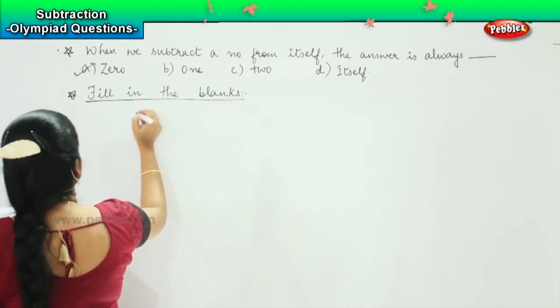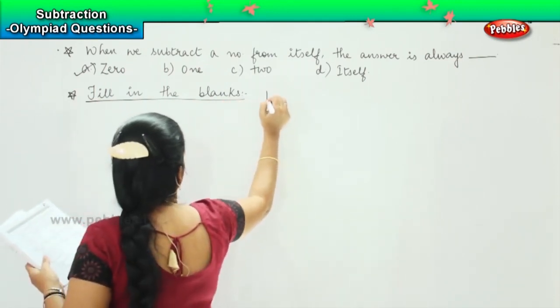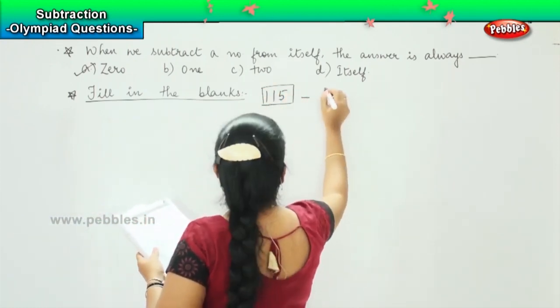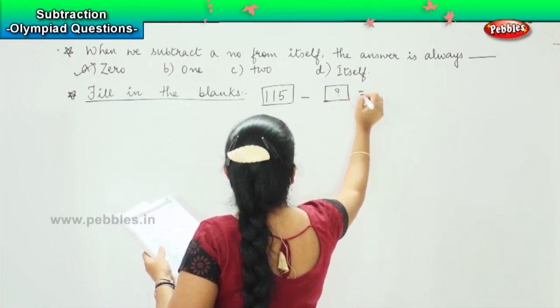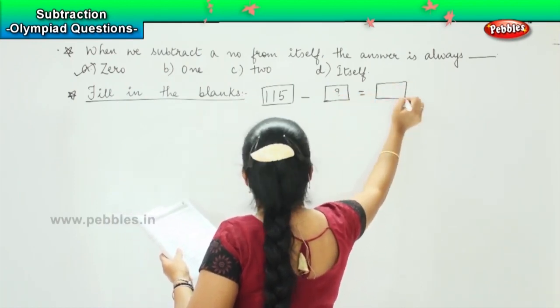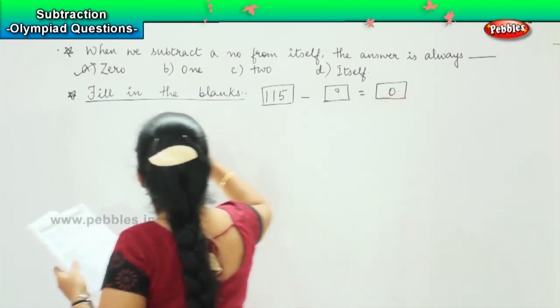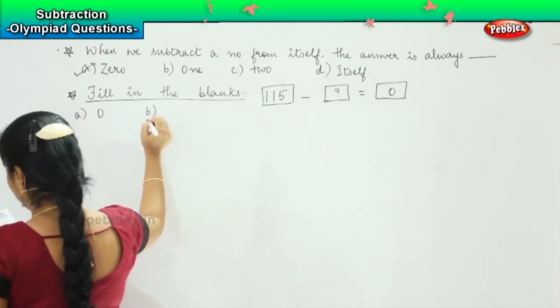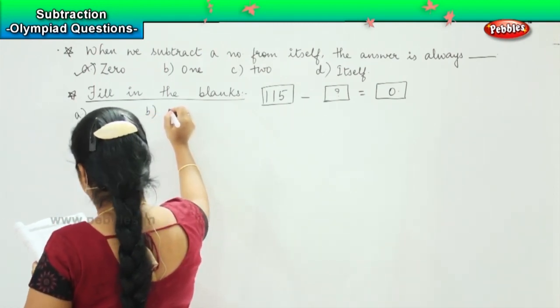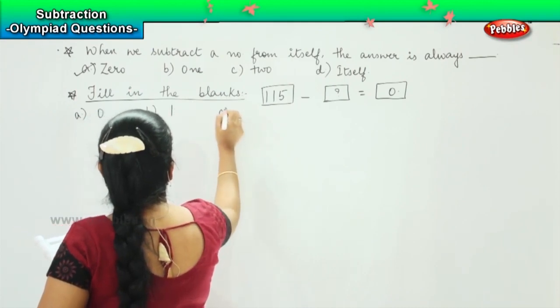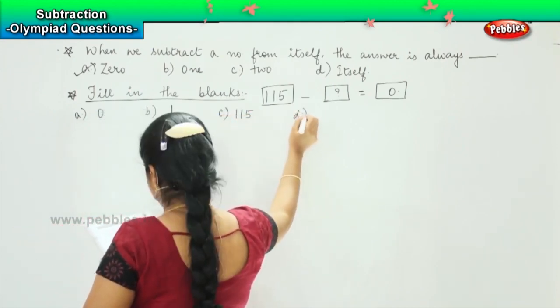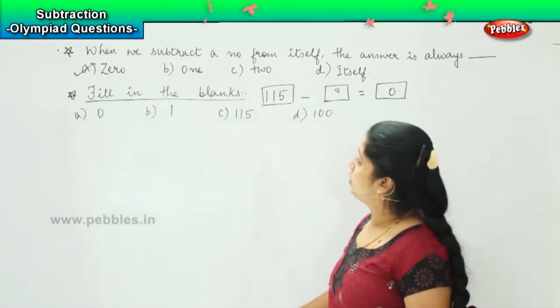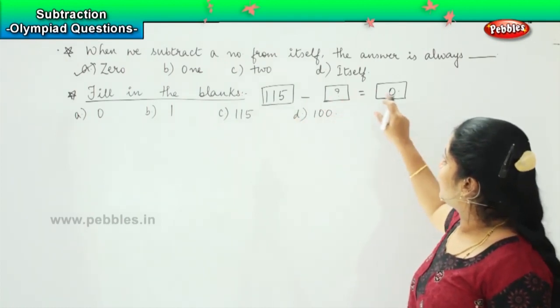The question is 115 minus something is equals to 0. Okay. And your options are a) 0, b) 1, c) 115, and d) 100. Okay. So, 115 minus something equals to 0.